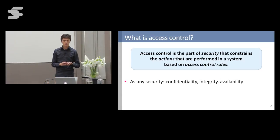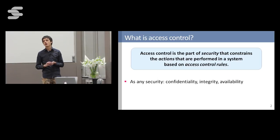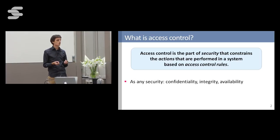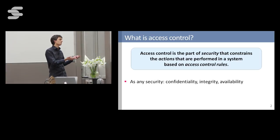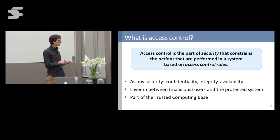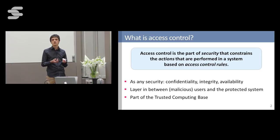As with any security, access control focuses on confidentiality, integrity, and availability. Most of the time, access control is positioned with a focus on confidentiality — constraining which users can access which part of the data. But in practice, it can also focus on integrity, for example blocking an action that would pull a server down. Access control is essentially a layer between potentially malicious users and the protected system. We call this the guard, and access control is definitely part of the trusted computing base for your application.